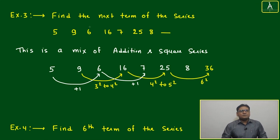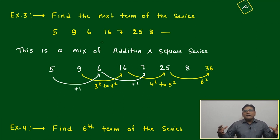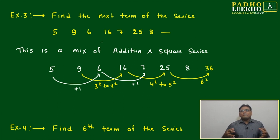Number three: find the next term of the series 5, 9, 6, 16, 7, 25, 8... Here's the problem - one time the number is going up, again coming down, again going up, again coming down. In this case, the only thing we can observe is that it is not one particular series, it is a combination of series.